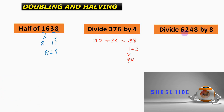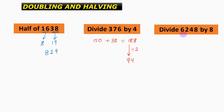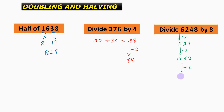For the next question we need to divide 6248 by 8. Again, we are going to divide by 2 and then repeat the process three times. Divide by 2 we get 3124, then again divide by 2 we get 1562, and then again divide by 2 we get 781, and that is going to be the answer for this question.